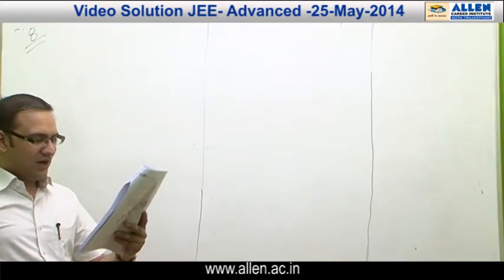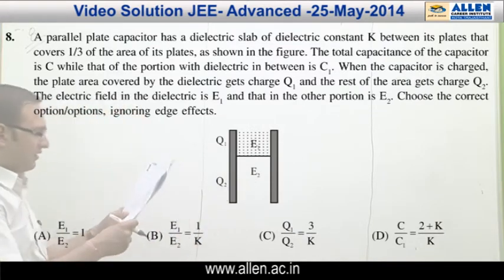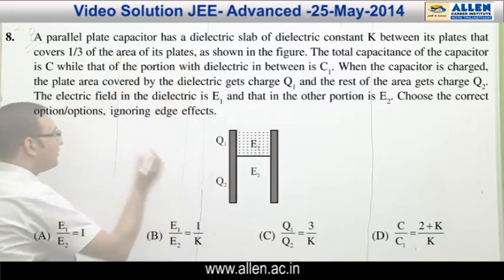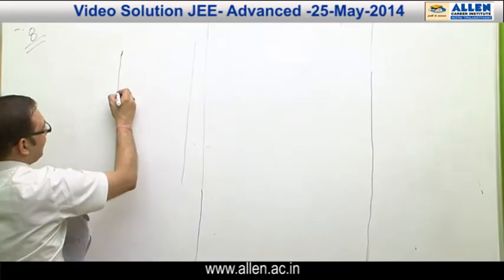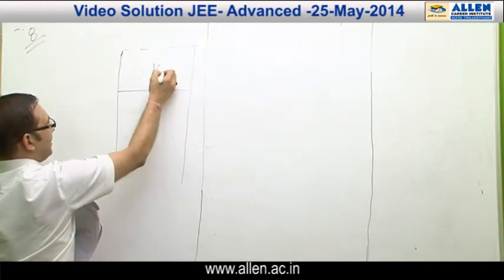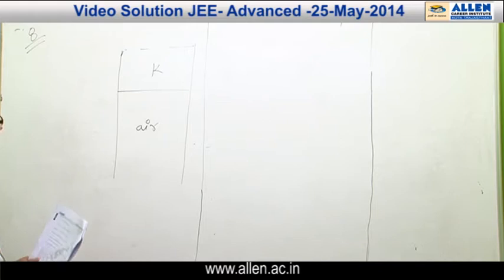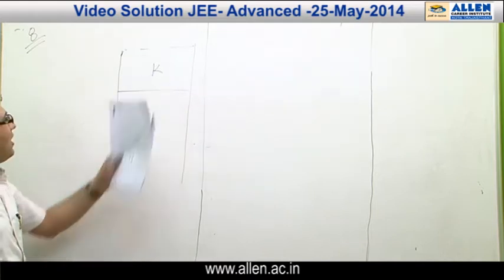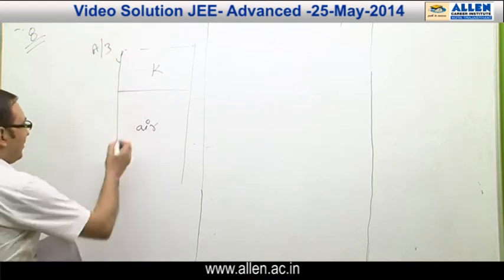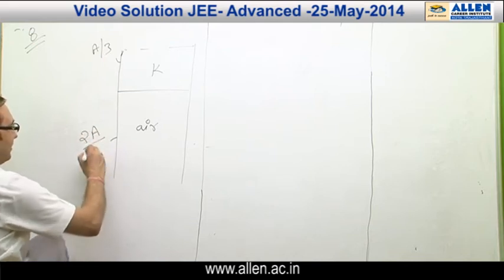Question 8 is from electrostatics — it is a capacitor question in which some part is filled by a dielectric slab. This is a parallel plate capacitor in which the upper part is filled by a dielectric whose dielectric constant is K, and in the remaining part there is air. For the dielectric part the plate area is A/3, and for the remaining air part the plate area is 2A/3.